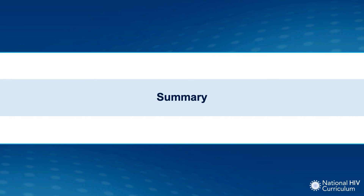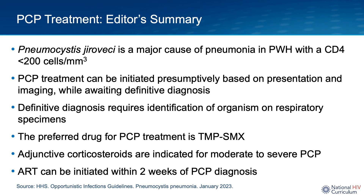In review: in people with HIV, Pneumocystis jirovecii is a major cause of pneumonia in individuals with a CD4 count less than 200. Treatment can be initiated presumptively based on clinical presentation, imaging, and preliminary labs while awaiting definitive microbiologic diagnosis. For definitive diagnosis, the organism must be identified on respiratory specimens such as induced sputum, lung biopsy tissue, or bronchoalveolar lavage. The preferred medication to treat PCP is trim sulfa. For moderate to severe PCP — defined by a PO2 less than 70 mmHg or an elevated alveolar-arterial gradient — adjunctive corticosteroids should be initiated alongside antimicrobial therapy, ideally within 72 hours. Antiretroviral therapy can be initiated within two weeks of a PCP diagnosis.